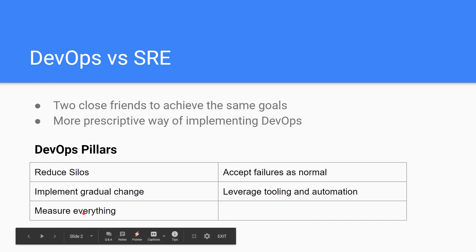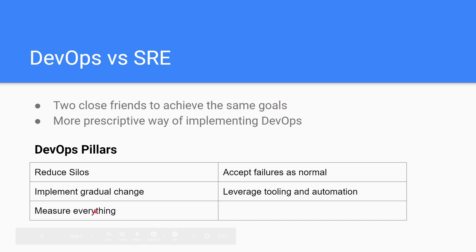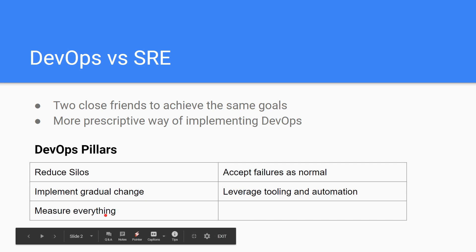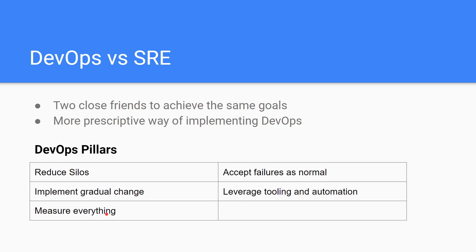The fifth pillar is measure everything. In DevOps you measure quality, MTTRs, and velocity. In SRE you measure toil, availability, and uptime of your service. DevOps and SRE are not versus each other — they go hand in hand to achieve a common goal for the company, which is basically stability of the product or service, keeping your customers happy while doing frequent changes.